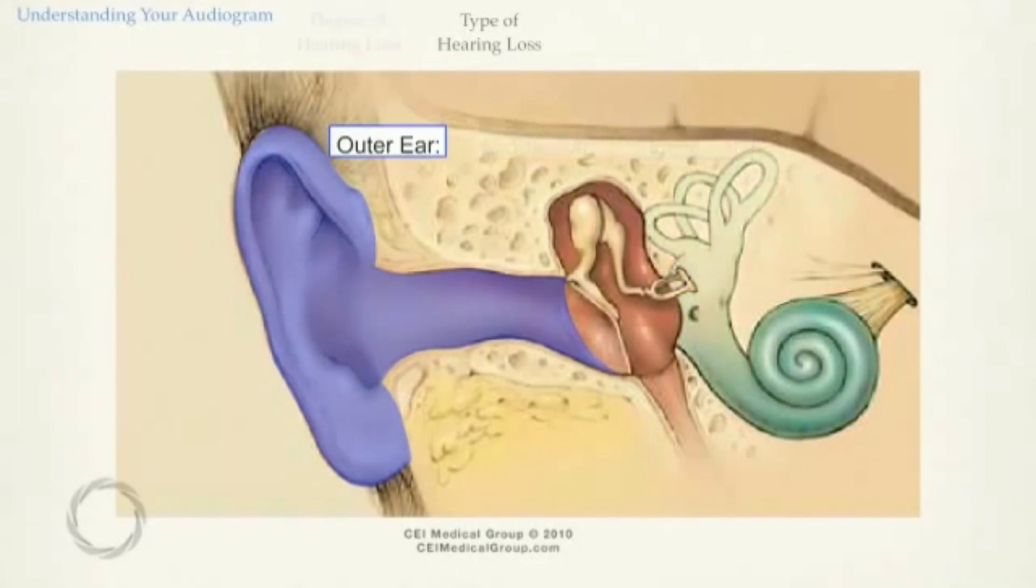The outer ear consists of the pinna, the ear canal, and the doorway to the next section, the tympanic membrane, or the eardrum.